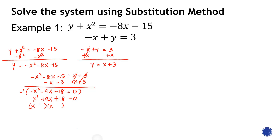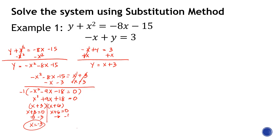The numbers are 3 and 6, both positive. Positive 3 times positive 6 equals 18, and positive 3 plus positive 6 equals 9. So we factor and equate each factor to zero. Solving: subtract 3 gives x equals negative 3, and subtract 6 gives x equals negative 6. Since we have two values of x, we will also have two values of y.